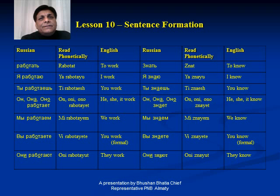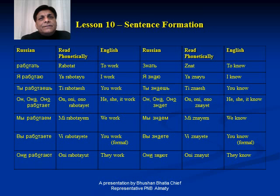In this lesson, we will be learning how to make sentences with a given verb and given pronoun. Like Hindi, in Russian also, the tail of the verb changes as per the subject. Whether the subject is singular, plural, third person, male, or female — in these cases, there is one particular tail after the verb.